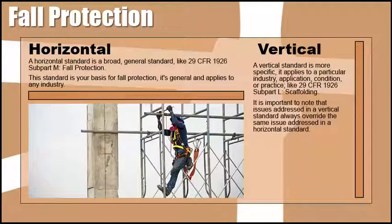A horizontal standard is a broad, general standard, like 29 CFR 1926 Subpart M Fall Protection. This standard is your basis for fall protection — it is general and applies to any industry; it's where you begin. A vertical standard is more specific; it applies to a particular industry, application, condition, or practice, like 29 CFR 1926 Subpart L Scaffolding. It is important to note that issues addressed in the vertical standard always override the same issue addressed in the horizontal standard.